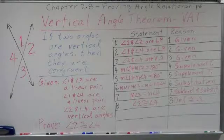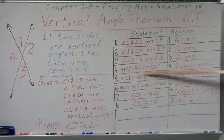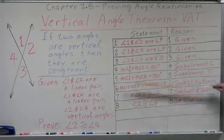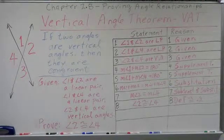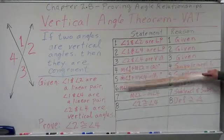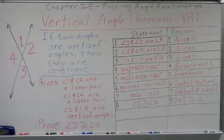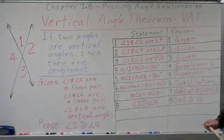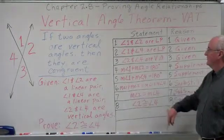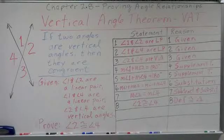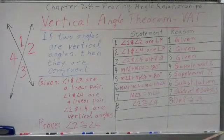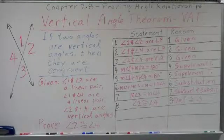From the Supplement Theorem we just proved, we know that the measure of angle one plus the measure of angle two equals 180, and the measure of angle one plus the measure of angle four equals 180 — both by the Supplement Theorem. Because they both equal 180, we can substitute: measure of angle one plus measure of angle two equals measure of angle one plus measure of angle four — by substitution. Using subtraction, we subtract angle one from both sides and are left with the measure of angle two equals the measure of angle four.